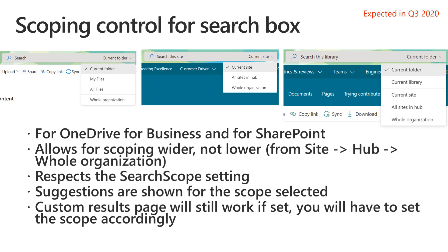Another thing we're excited about for OneDrive for Business is shared libraries. Previously you couldn't search in those, but with this affordance you'll be able to use the current folder scope to search in those areas. The scoping control is also coming to SharePoint search boxes, so if you're in a library or a site you'll be able to scope things to the current site or to all sites in the hub if the site is connected to a hub.